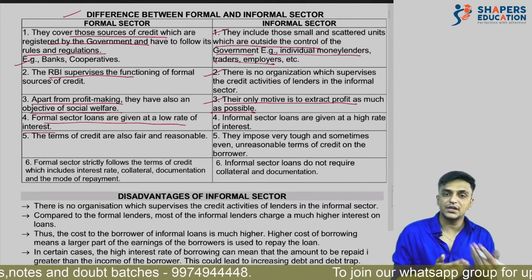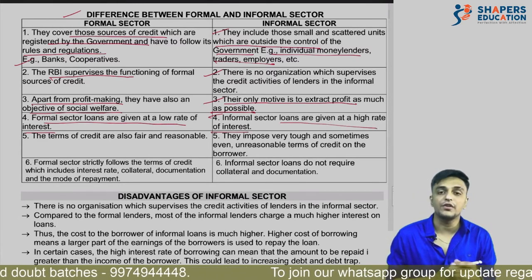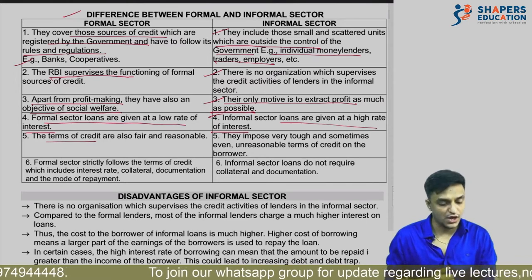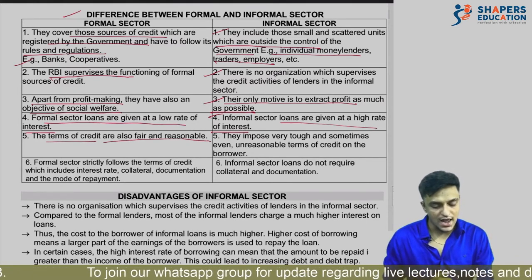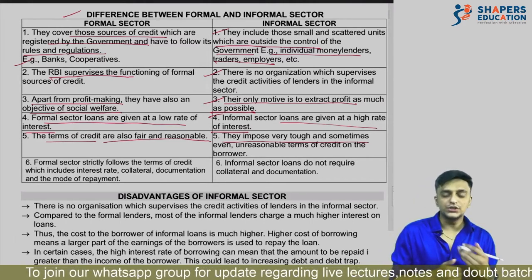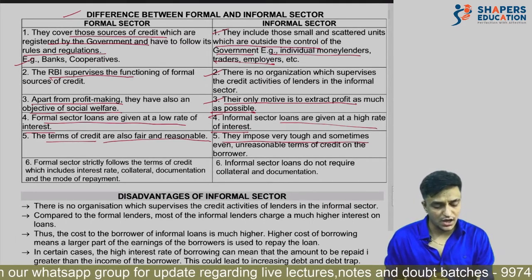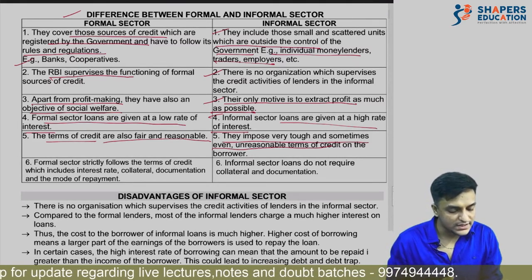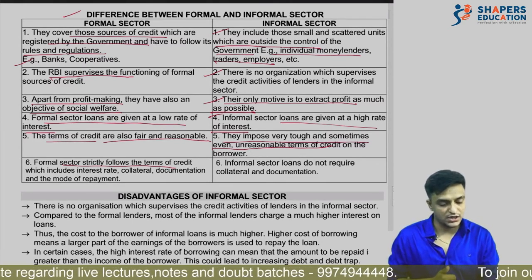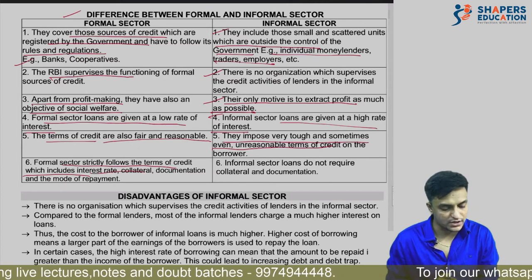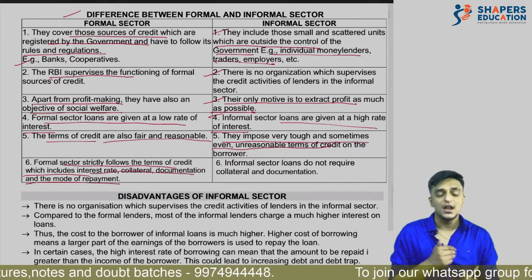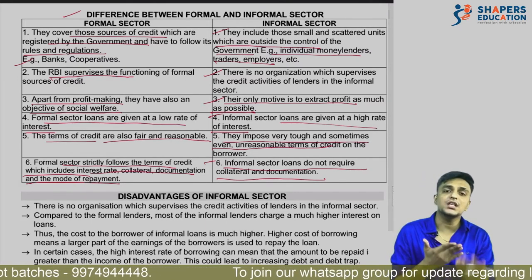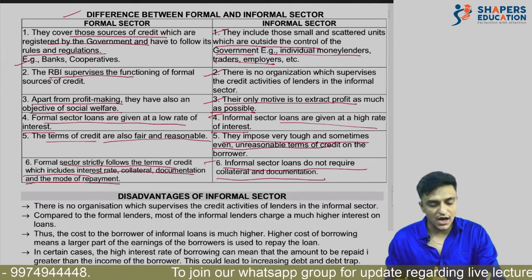Formal sector loans are given at a low rate of interest; informal sector loans are given at a high rate of interest. Terms of credit — including mode of repayment, collateral, and interest rate — are fair and reasonable in the formal sector. In the informal sector, very tough rules are set arbitrarily, and sometimes unreasonable terms of credit are applied. Formal sector strictly follows rules related to interest rate, collateral, documentation, and mode of repayment. Informal sector does not require collateral and documentation, and sets its own terms and conditions.